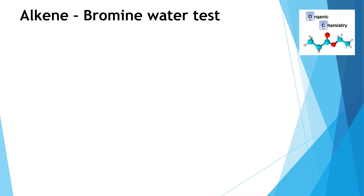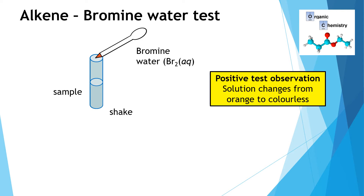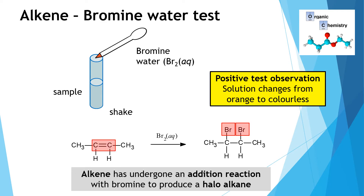We also have a second test to check if an organic molecule is unsaturated — whether it has a double bond or a triple bond. This is called the bromine water test. If we take a sample of an alkene and add bromine water, which is orange, and shake it, the solution goes colourless immediately or after a few seconds. That demonstrates there is a double or triple bond present. The positive test for bromine water with an alkene is that it goes from orange to colourless. The alkene breaks its double bond and has a bromine added to each side to produce a haloalkane.